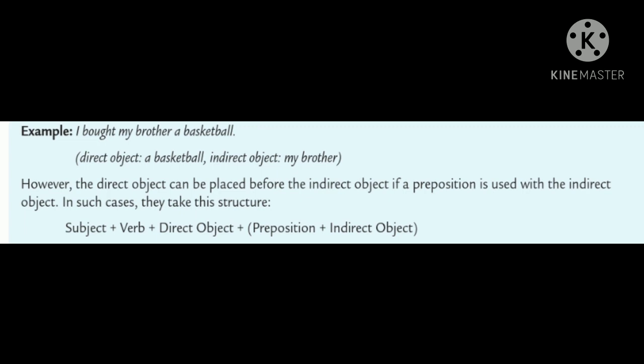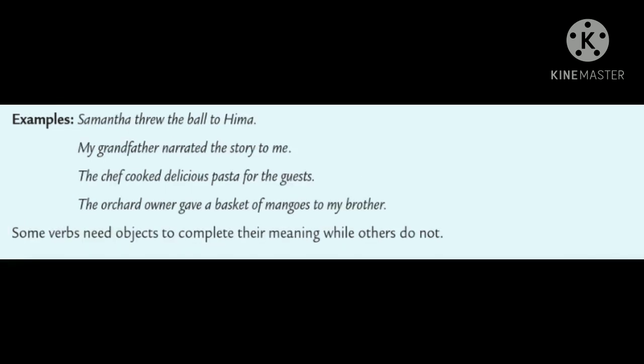However, the direct object can be placed before the indirect object if a preposition is used with the indirect object. In such cases, they take this structure: subject, verb, direct object, preposition plus indirect object. Examples: Samantha threw the ball to Hema. My grandfather narrated the story to me.